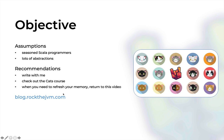I'll recommend that you write code with me, and whenever you need to refresh your memory, you should refer back to this video, or to the blog, or to the CATS course. I have an entire CATS course on the Rock the JVM website — I'll leave a link in the description. In the CATS course we deconstruct most of the things in this video with exercises, use cases, and thought experiments. If you're ready to go to the CATS type class hierarchy, let's go to our code editor.